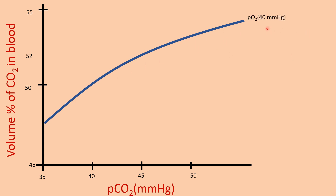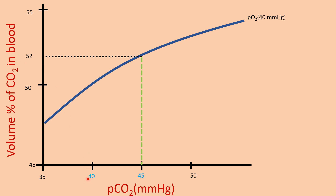This first curve was drawn at a partial pressure of oxygen of 40 mmHg, which exists in the tissue capillaries. When the partial pressure of carbon dioxide in the tissue capillaries is 45 mmHg, it corresponds to 52% volume of carbon dioxide in the blood — meaning in 100 mL of blood, the volume of carbon dioxide would be 52 mL.